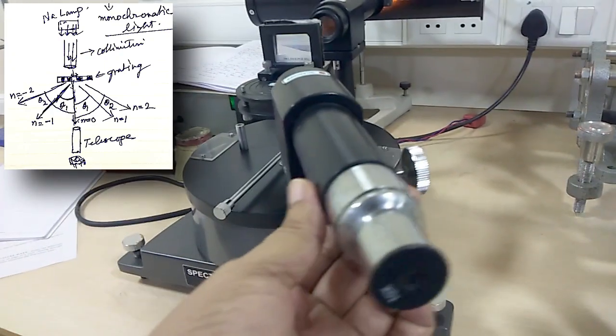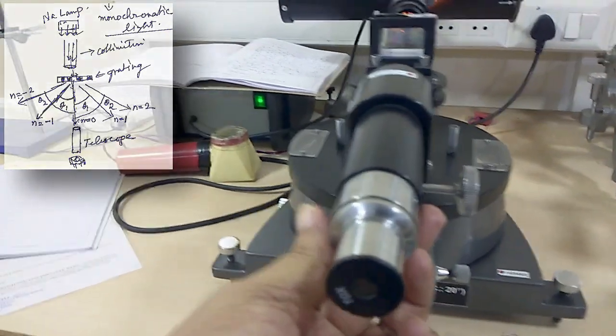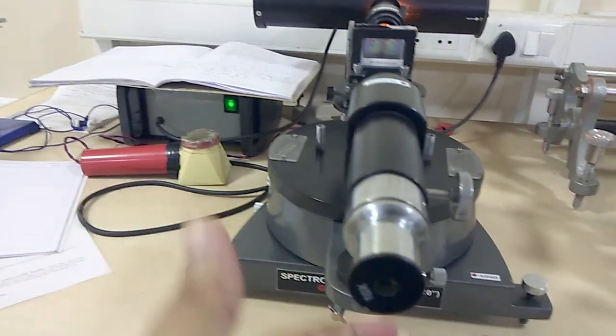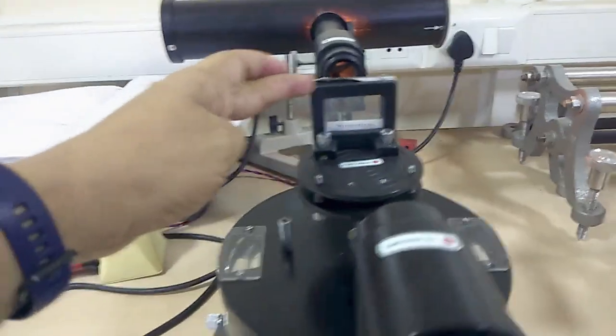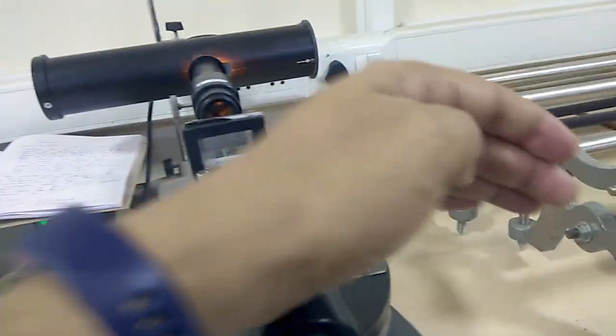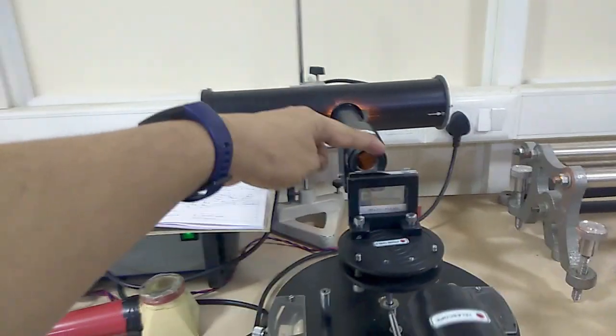So in this way for different n values I will have different angles. That means this diffraction grating is diffracting light at different angles and that light is coming from the collimator like this.